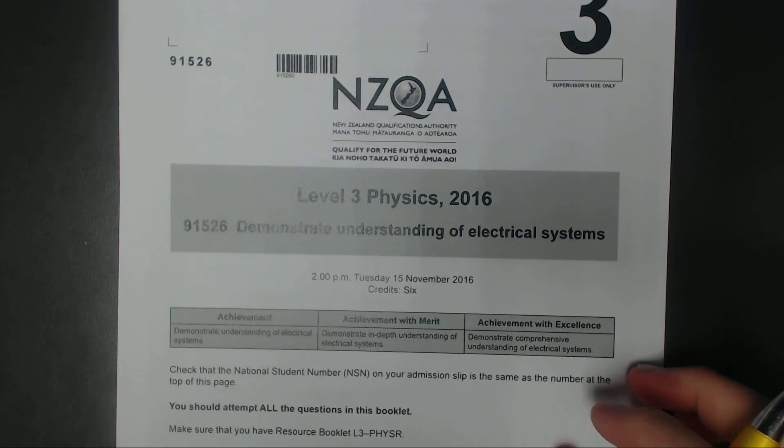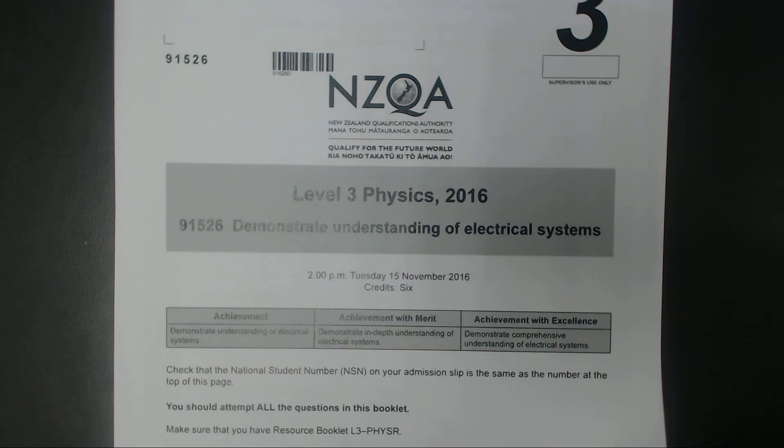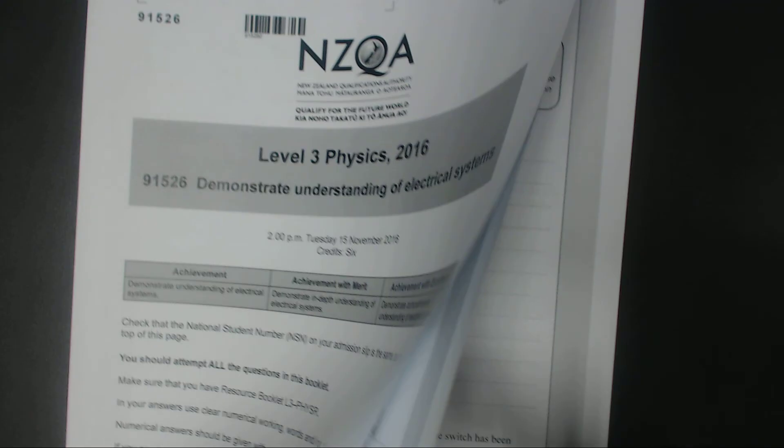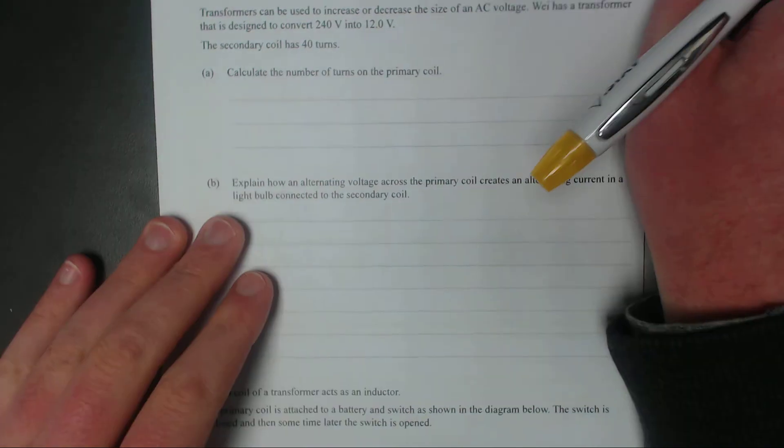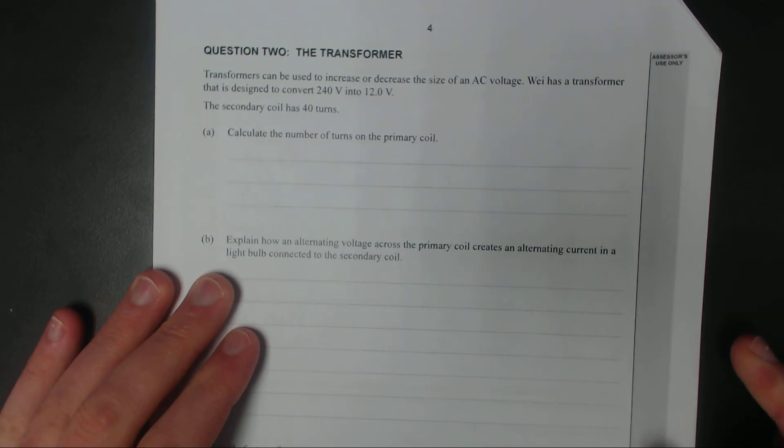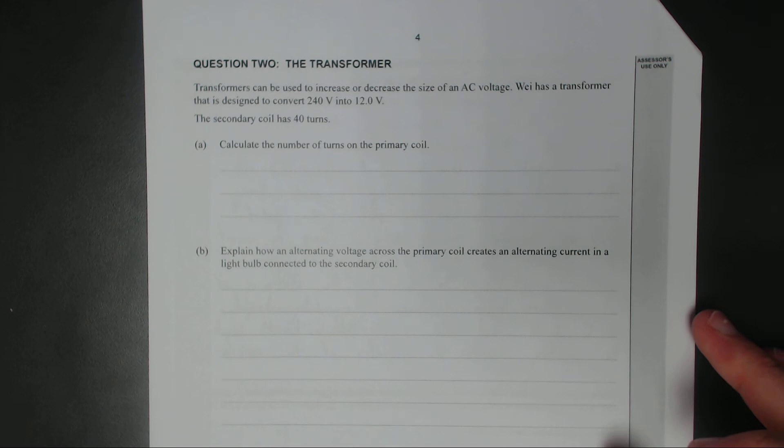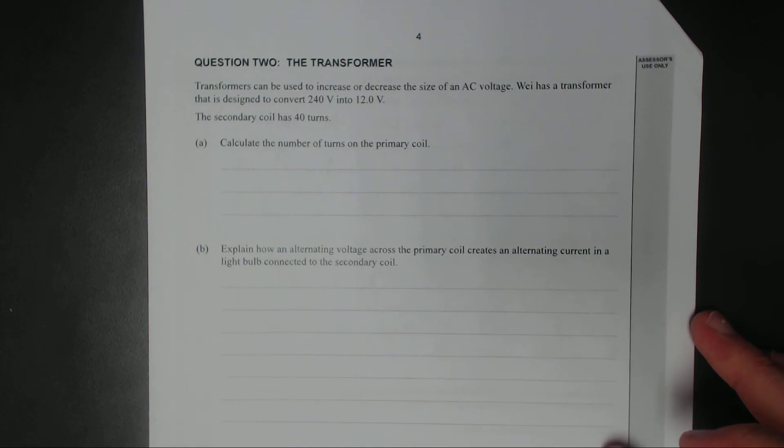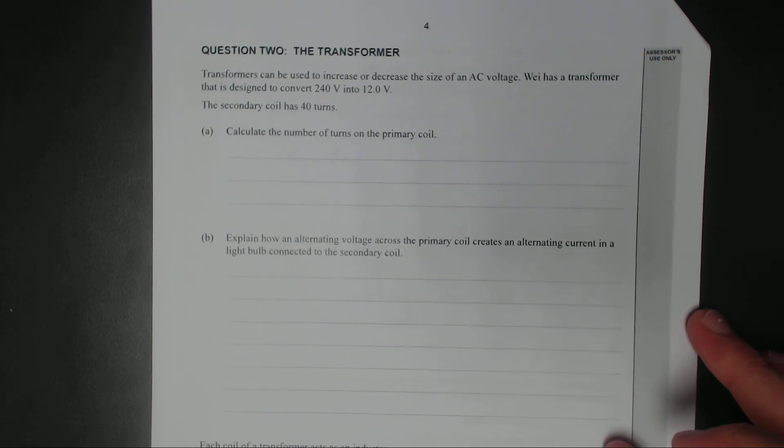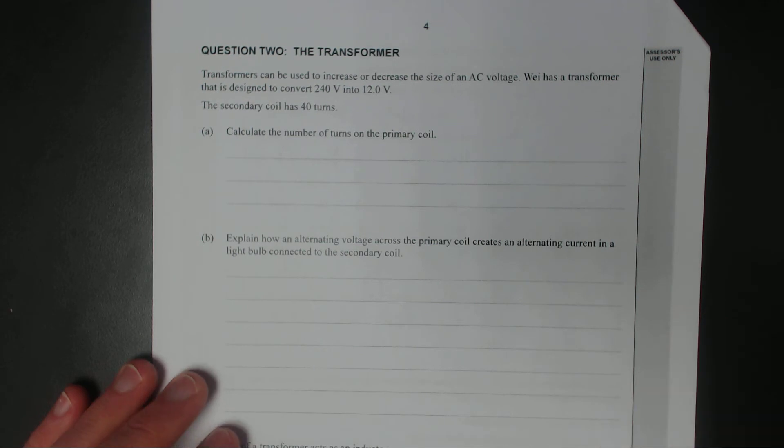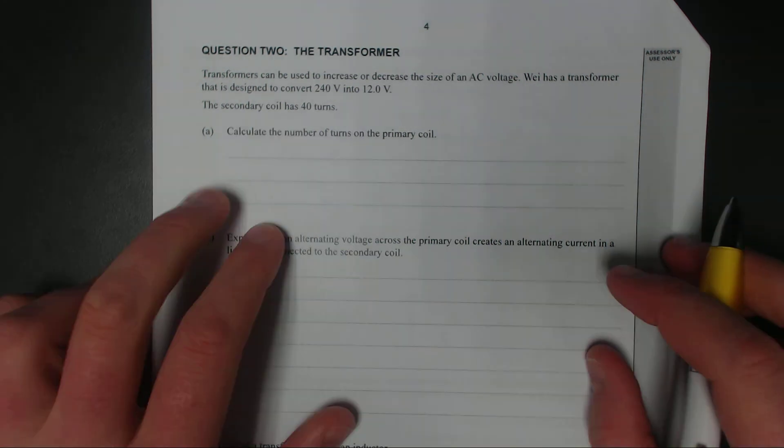This is the Level 3 2016 Electricity Exam. For this video I'll be working with Question 2. Question 2 is the transformer. Transformers can be used to increase or decrease the size of an AC voltage. We have a transformer that is designed to convert 240 volts to 12 volts. The secondary coil has 40 turns. Calculate the number of turns in the primary coil.